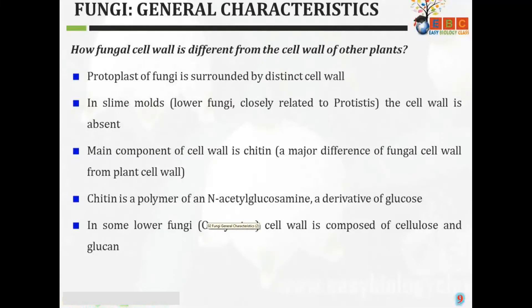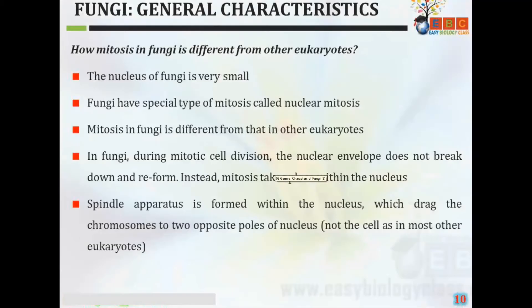A major difference of fungal cell wall from plant cell wall: plant cell wall contains cellulose, whereas fungal cell wall contains chitin. Chitin is a polymer of N-acetylglucosamine, a derivative of glucose. In lower fungi, the cell wall is composed of cellulose and glycine, which is similar to the plant cell wall.